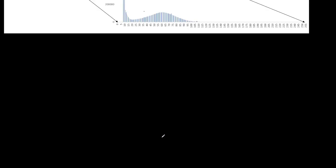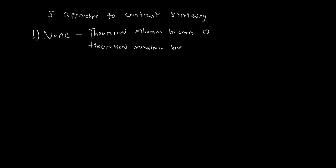There's five approaches to contrast stretching. One is we do nothing, or the None, and this is the theoretical minimum becomes zero and the theoretical maximum becomes 255. That's the first option.